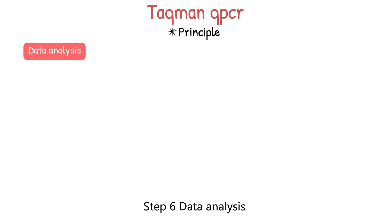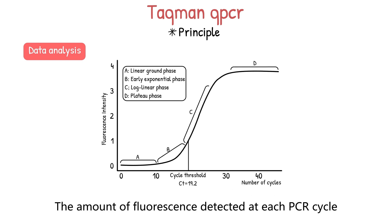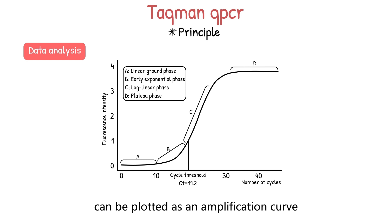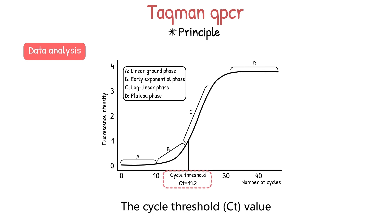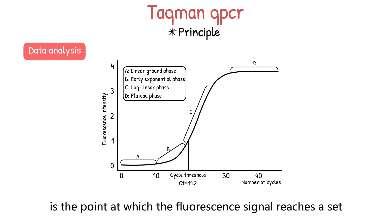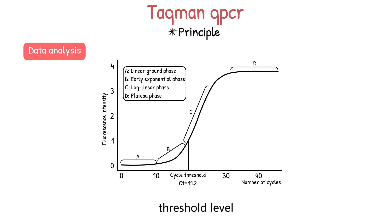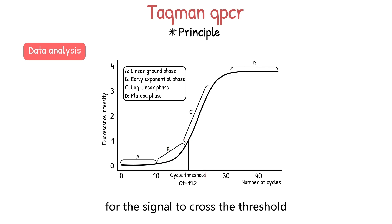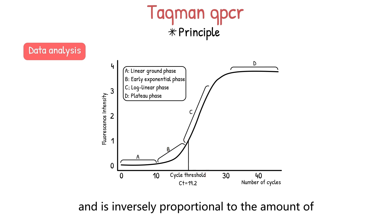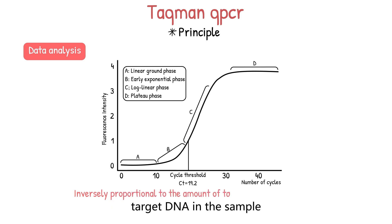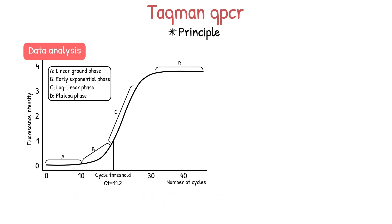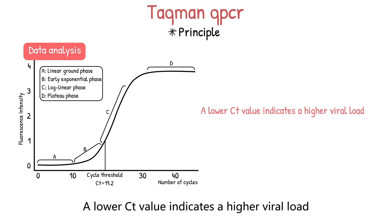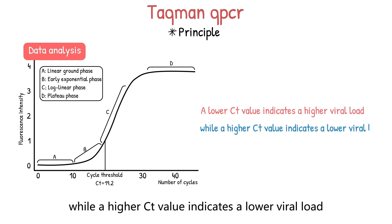Step 6 is data analysis. The amount of fluorescence detected at each PCR cycle can be plotted as an amplification curve. The cycle threshold, or CT value, is the point at which the fluorescent signal reaches a set threshold level. The CT value corresponds to the number of cycles required for the signal to cross the threshold and is inversely proportional to the amount of target DNA in the sample. A lower CT value indicates a higher viral load, while a higher CT value indicates a lower viral load.